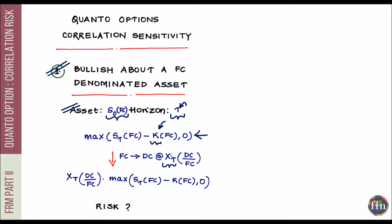This foreign currency to domestic currency conversion will happen at the prevailing spot rate in the foreign exchange market. I'm assuming this rate is denoted by XT — the rate applicable at time T — and XT is quoted as the number of units of USD (the domestic currency) per one JPY (the foreign currency). So this quote is the price of one unit of the foreign currency, JPY, in USD.